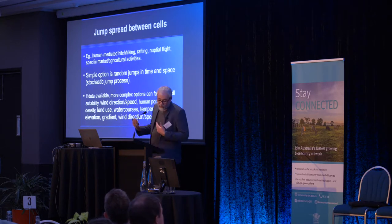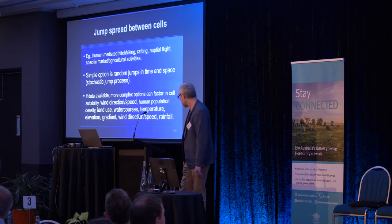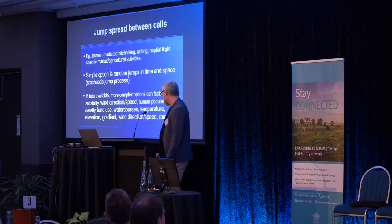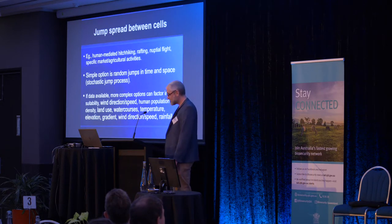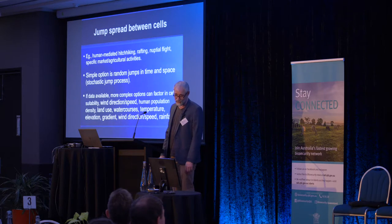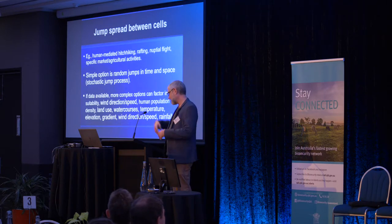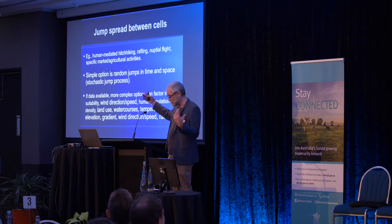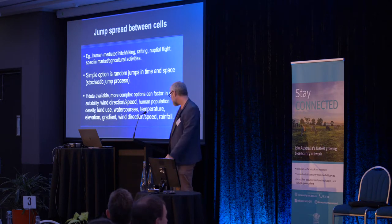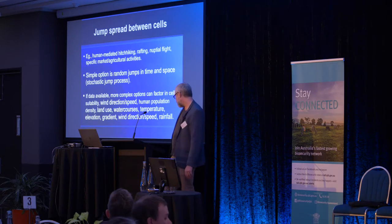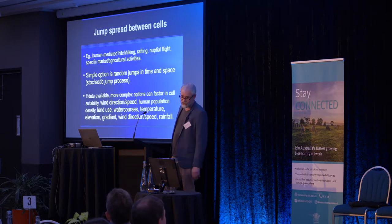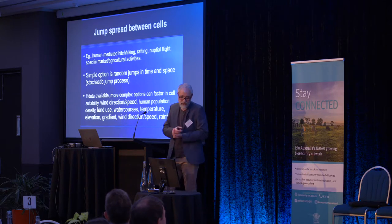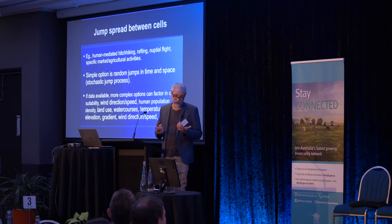The longer, more unpredictable spread is a jump process — human-mediated hitchhiking. If there's no data, we can jump it in a random direction at a random time for a random distance. But hopefully we can do better: we can look at where outlying colonies have emerged and deduce the distances they're hitchhiking. For example, if a cell has high human population density, that informs the stochastic decision of whether a jump will or will not occur.